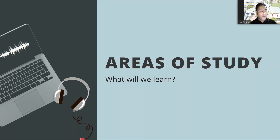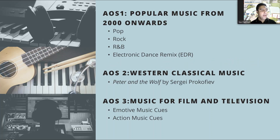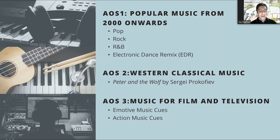So what will your child be learning? In the NT Music Syllabus, there are altogether four areas of studies. The first area of study is popular music from the year 2000 onwards. In this study, students will learn the characteristics of four different genres. These genres are pop, rock, R&B and electronic dance remix.